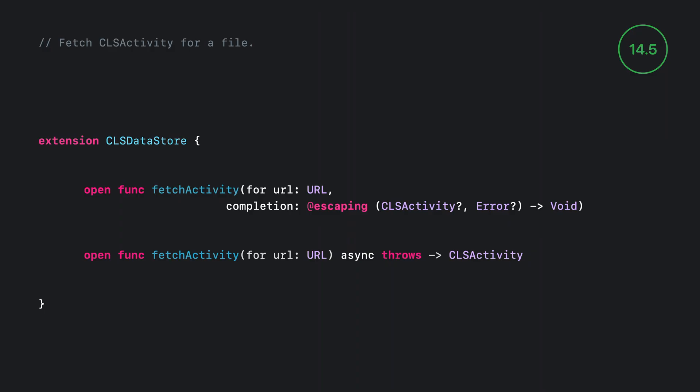Here's the new API for adding progress data to a file. It's called FetchActivity, and it lives on CLS Datastore. I have both the async and async alternative versions of this API shown here. You'll pass in the file URL of your file to this API, and it returns a CLS activity. Once you have this CLS activity, you can add progress data to it. Now let's take a look at the types of progress data your app can submit.